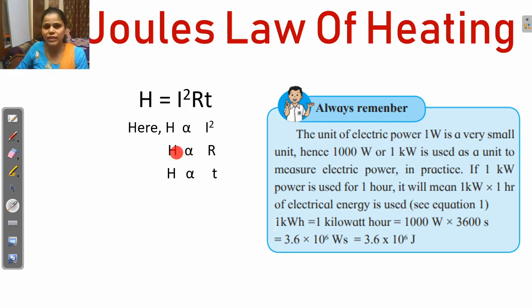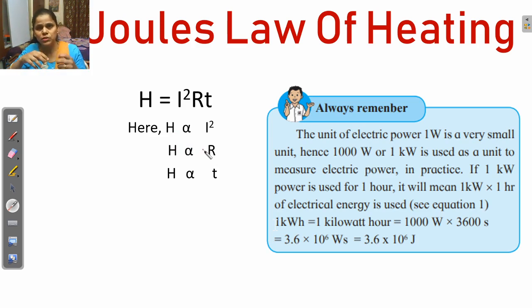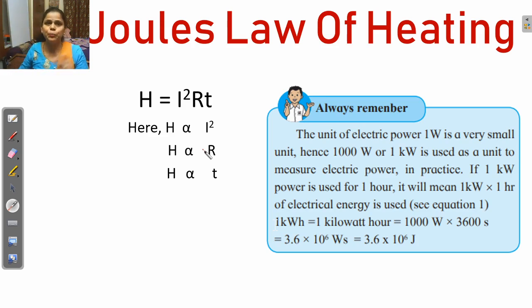Next, H is directly proportional to R. The meaning of this is: if we use metals that have a higher resistance, then the heat produced is higher.